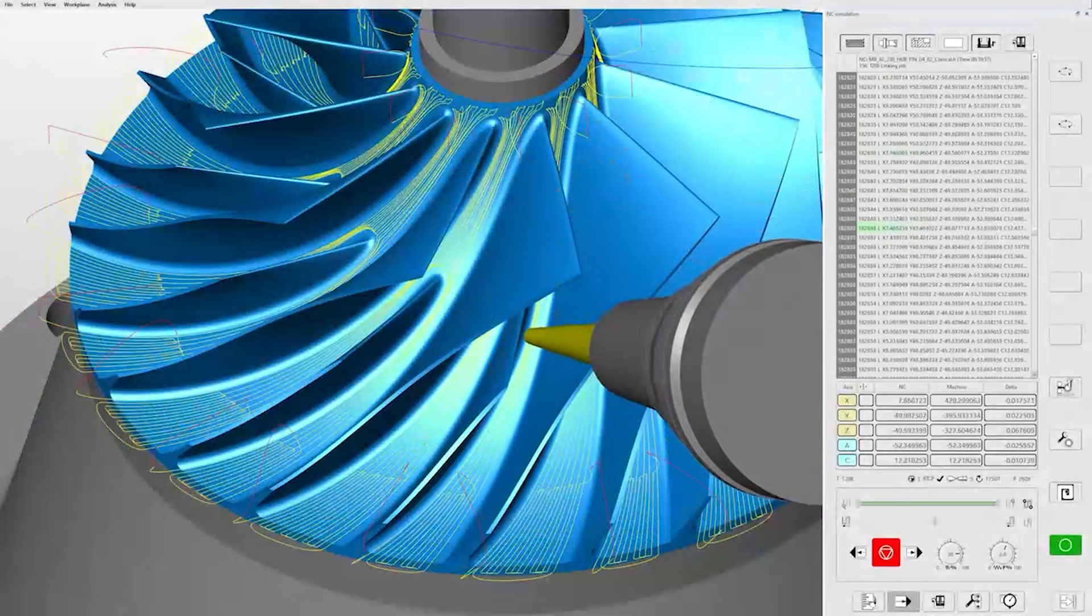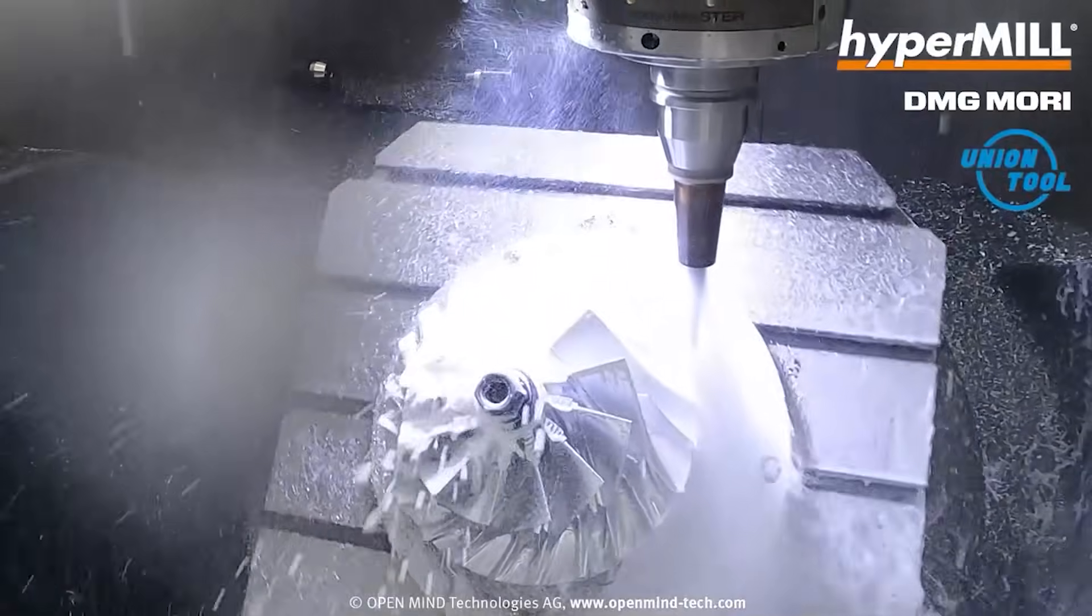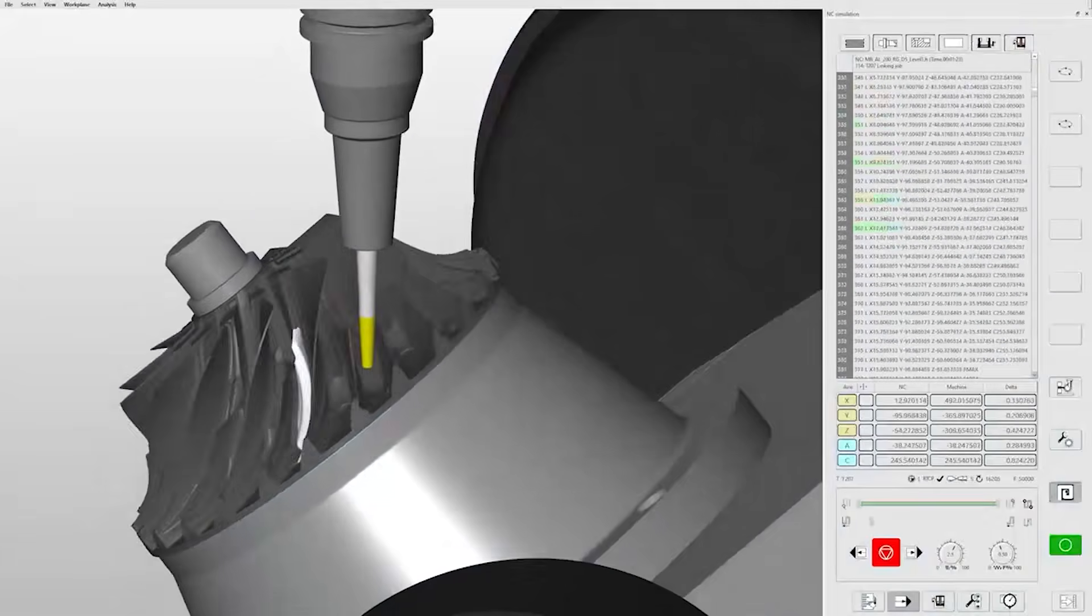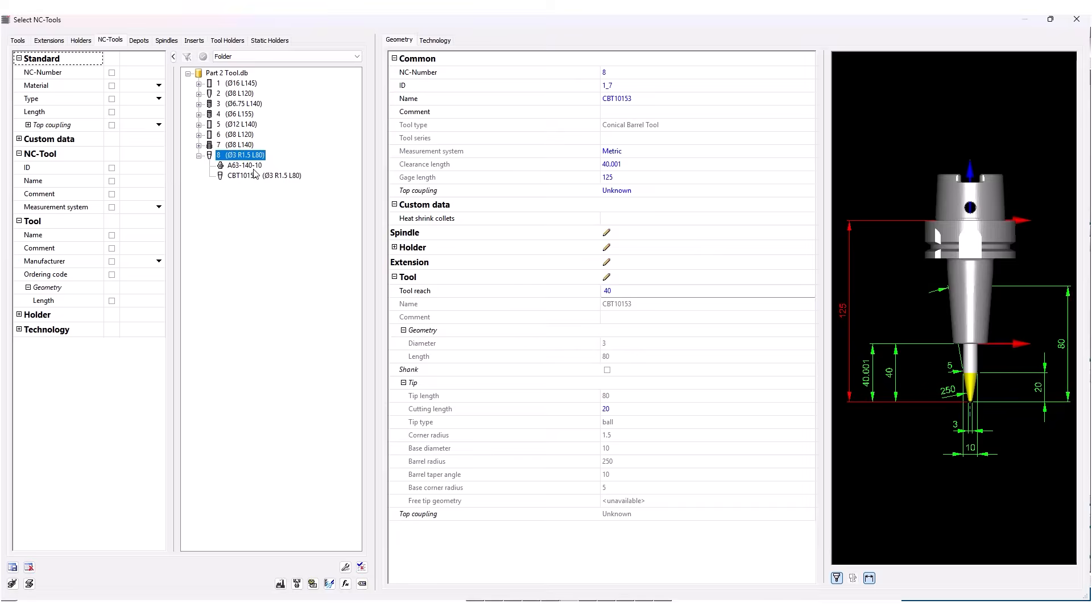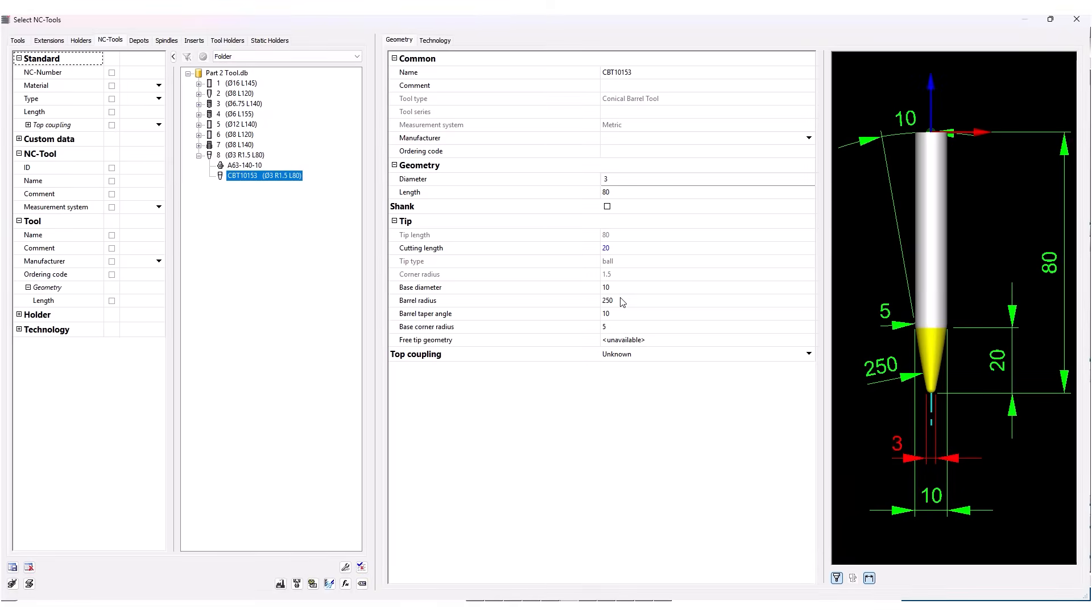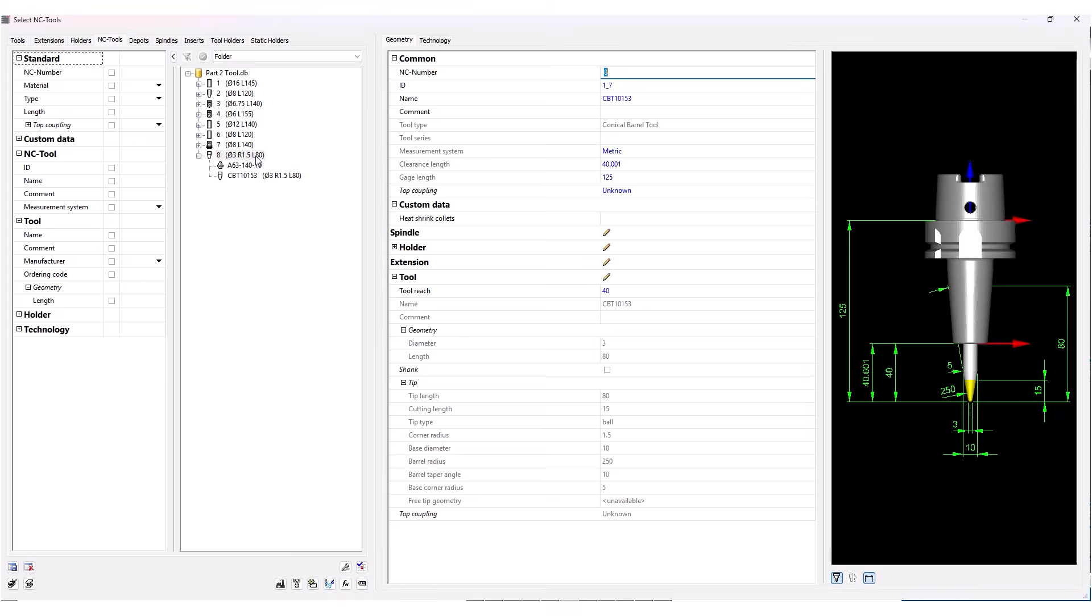HyperMill has always had collision detection, and a lot of systems have that. But what really sets us apart is our collision avoidance. We're not just telling you that the tool isn't sticking out far enough or it's coming into collision—we actively find a solution that fits. When you define your tool, you'll have your tool holder, extension, spindle, everything that is physically on the machine in HyperMill, and it's using that full assembly to find a collision-free toolpath automatically.